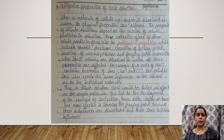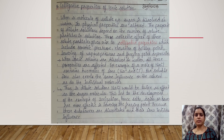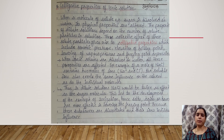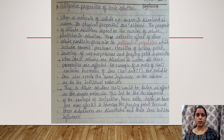The next physical property of water is colligative properties, which depend on the substance dissolved in it. When a molecule of solute such as sugar is dissolved in water, the physical properties of water are altered. The properties of dilute solutions depend on the number of solute particles in solution, and the collective effect gives rise to colligative properties, which include osmotic pressure, elevation of boiling point, lowering of vapor pressure, and freezing point depression. When ionic solutes such as sodium chloride — which contains two moles of ions, sodium and chloride — are dissolved, all these properties are affected.